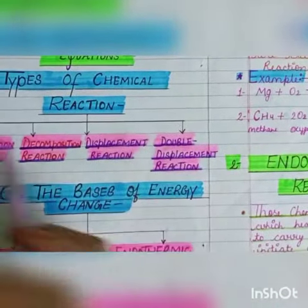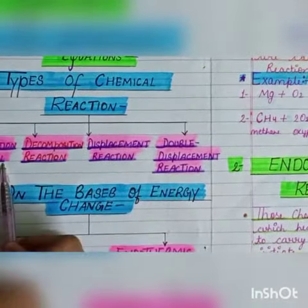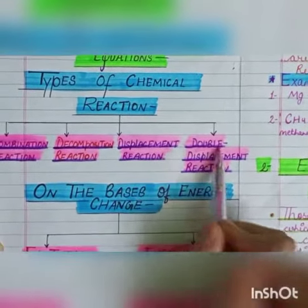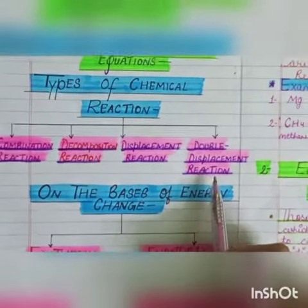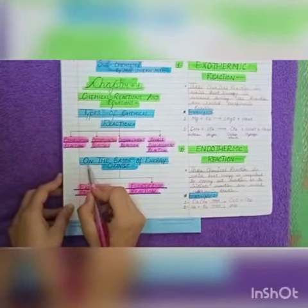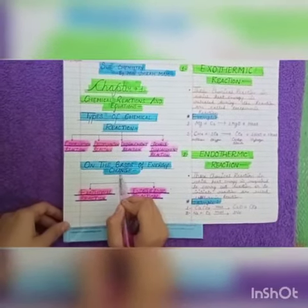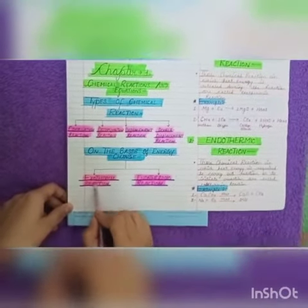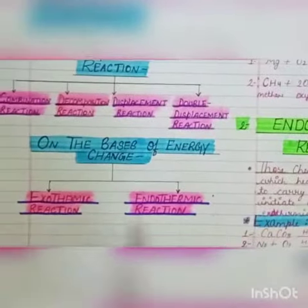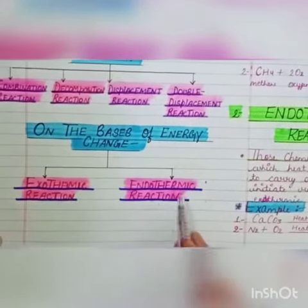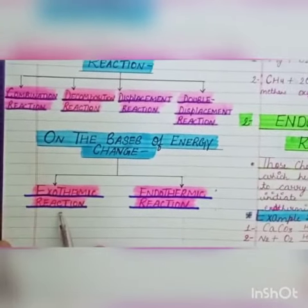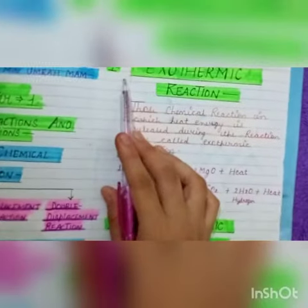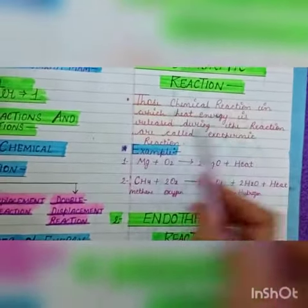There are four types of chemical reactions: combination reaction, decomposition reaction, displacement reaction, and double displacement reaction. But on the basis of energy change, there are two types of reactions: exothermic reaction and endothermic reaction.